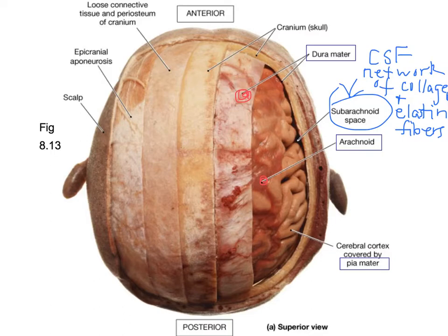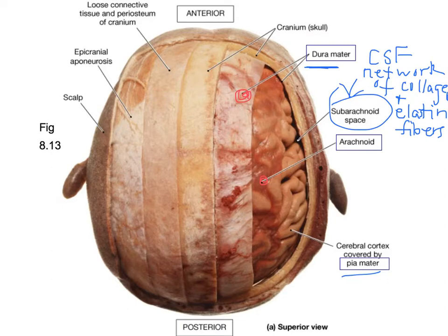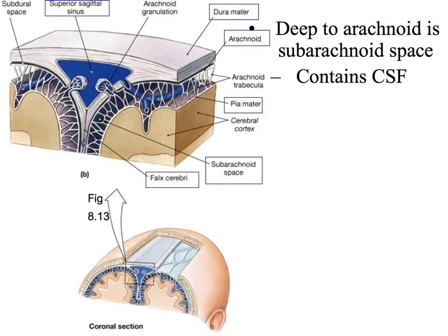Deep to the subarachnoid space is the pia mater, which is very thin and contains many nerves and blood vessels that nourish the underlying cells of the brain and spinal cord. This layer hugs and contours to the brain and spinal cord. If there's a blow to the head, you can break blood vessels and the escaping blood collects under the dura mater, causing pressure between the skull bones and the soft tissue of the brain. That's when drilling holes into the skull is needed to release the fluid.